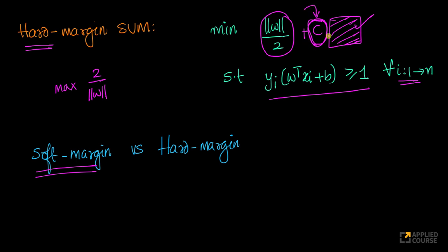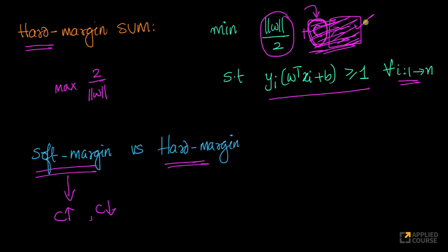In a soft margin SVM, you have hyperparameter C — some write it as C, others as lambda depending on convention. By increasing or reducing C, you can either overfit or underfit. But in a hard margin SVM, you don't have any hinge loss term. You are trying to just maximize the margin such that all points are correctly classified. Some people mistakenly say they will play with hyperparameter C, but you don't have that in a hard margin SVM.